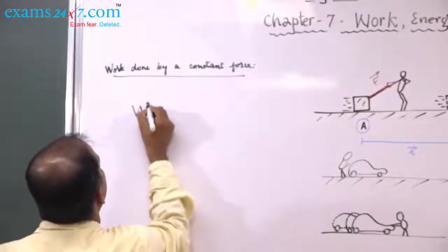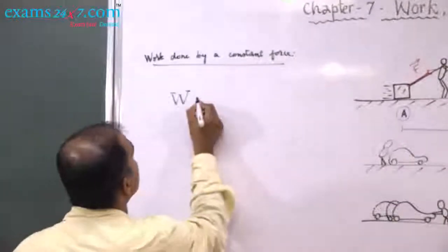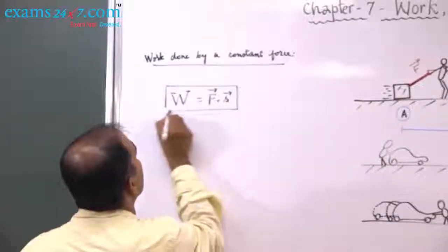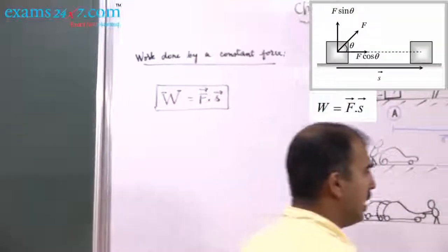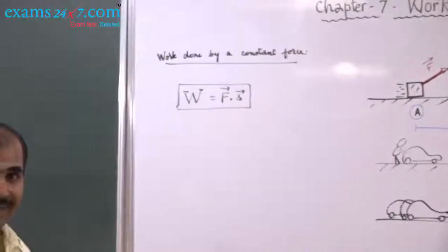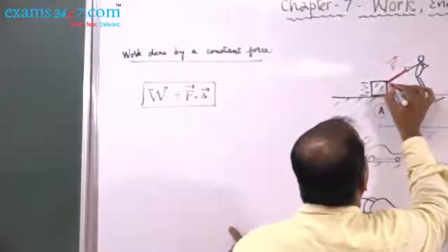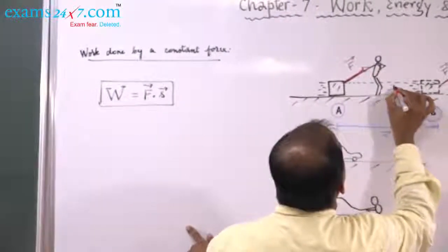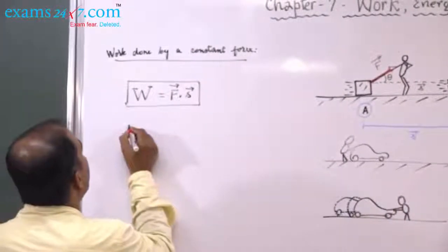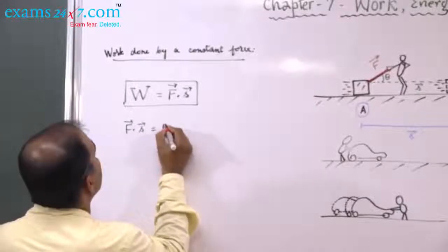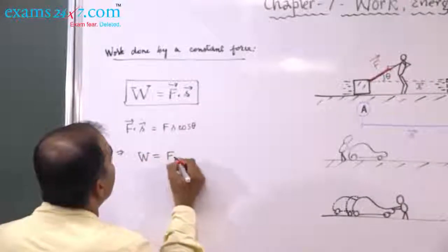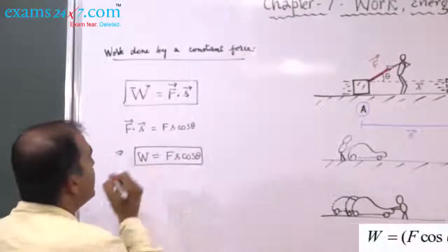Work done by a constant force, written as capital W, is the dot product of force and displacement: W = F · S. From elementary mathematics, the dot product A · B = AB cosθ, where θ is the angle between the displacement vector S and force vector F. Therefore W = F S cosθ.